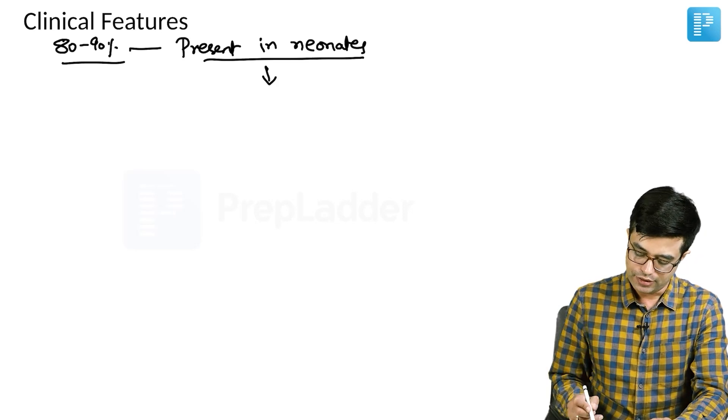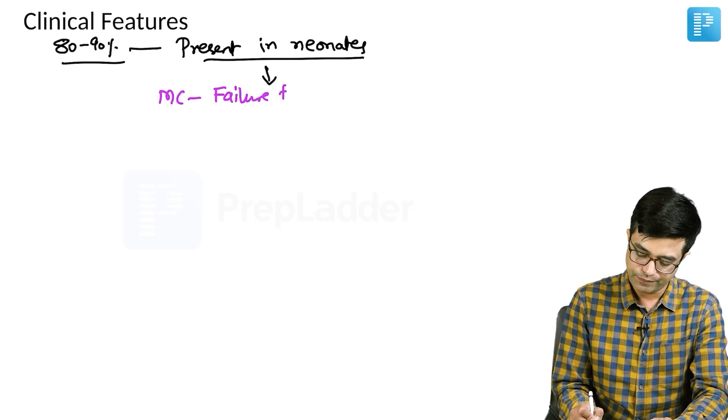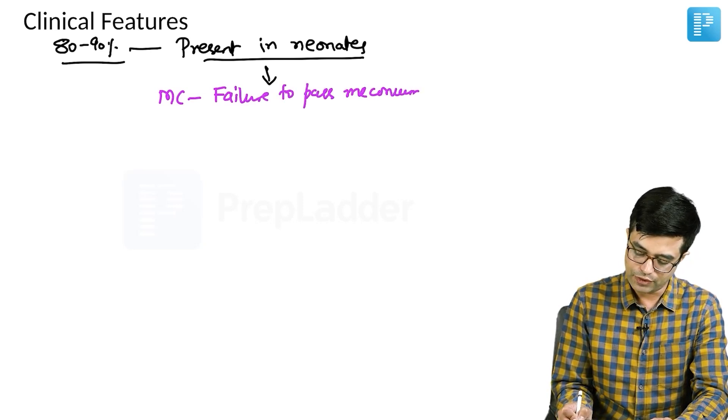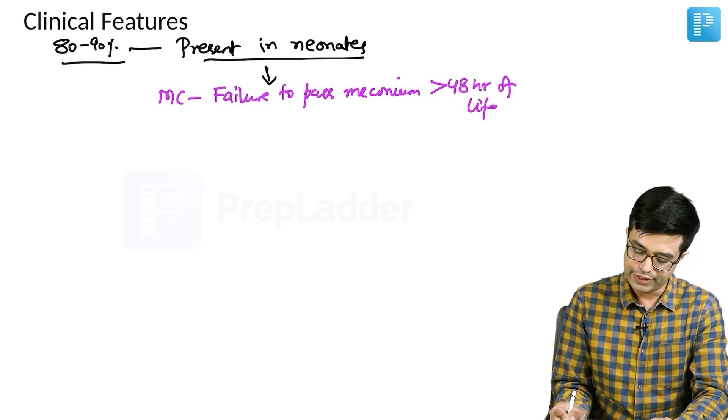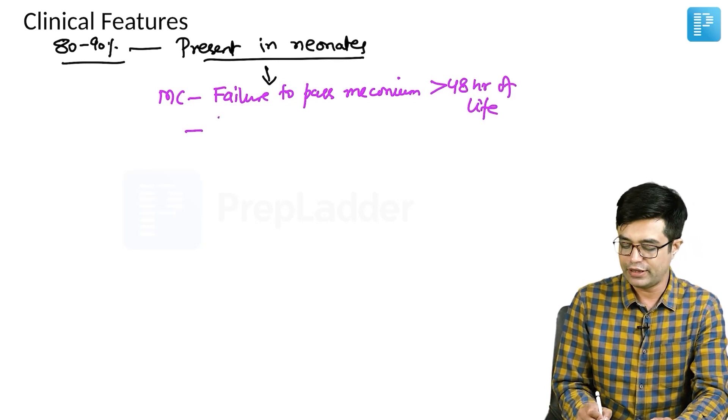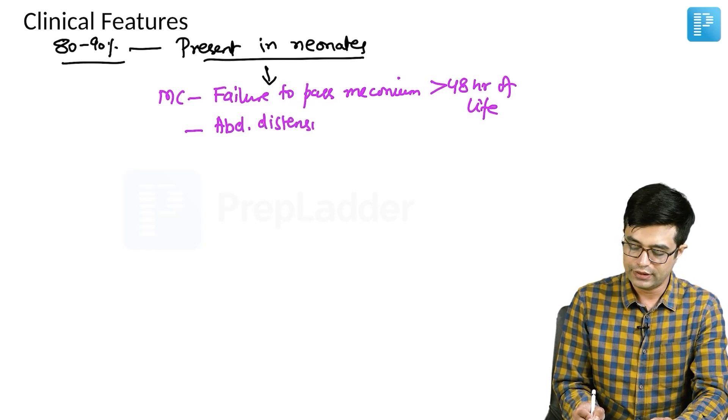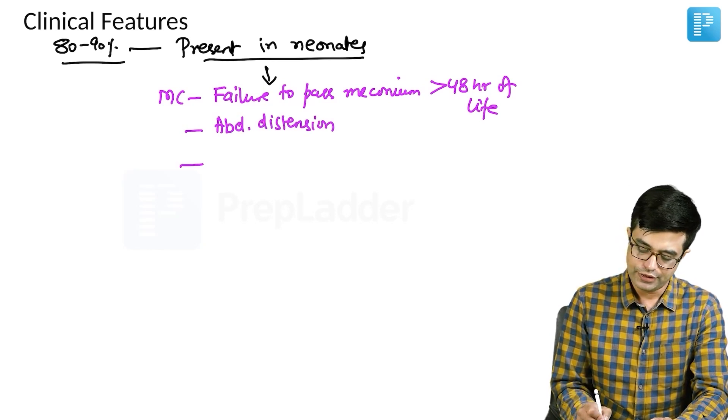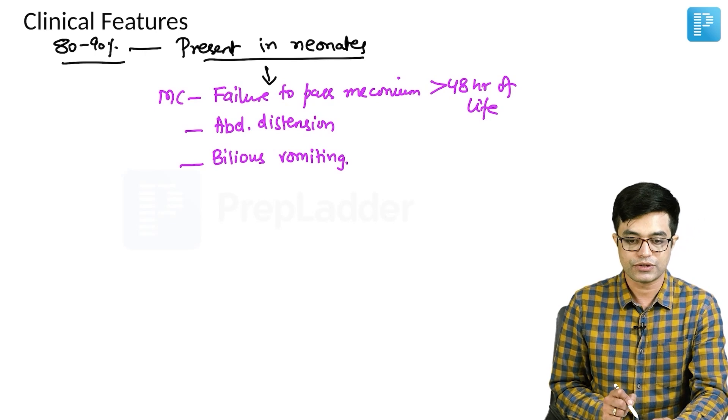And what is the presentation? The most common presentation in the newborn period is failure to pass meconium. There is a failure to pass meconium more than beyond 48 hours of life. In addition, these children will have progressive abdominal distension. They can also have bilious vomiting. So, these are the characteristic findings that you will see in newborns.